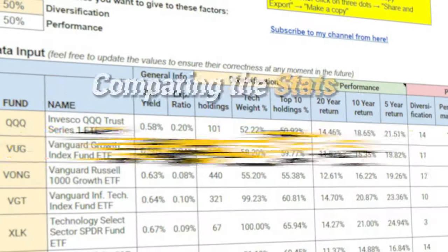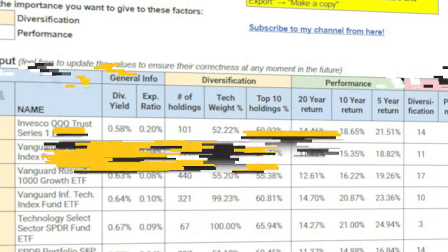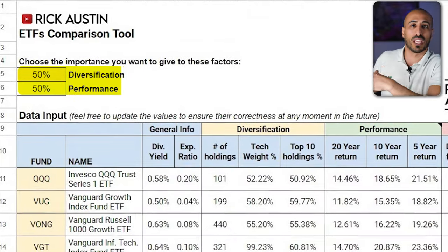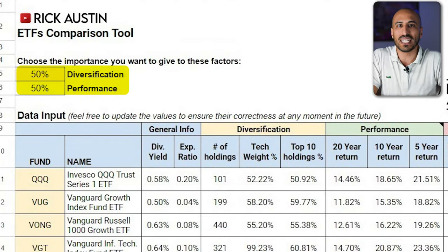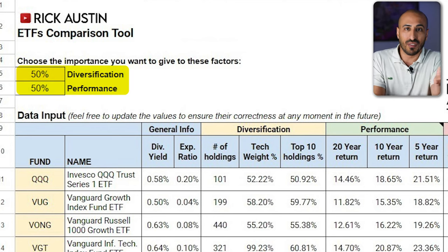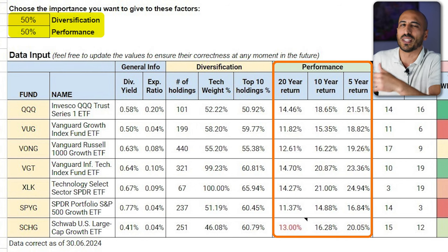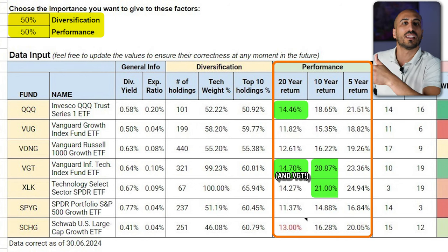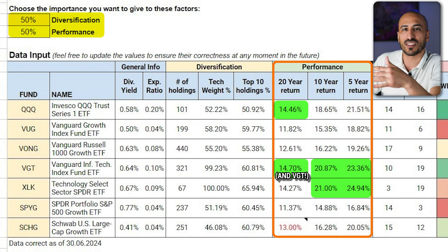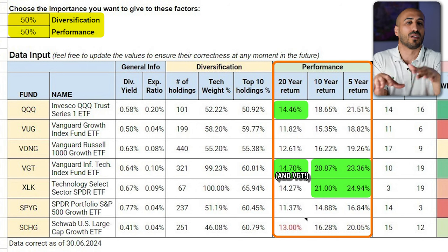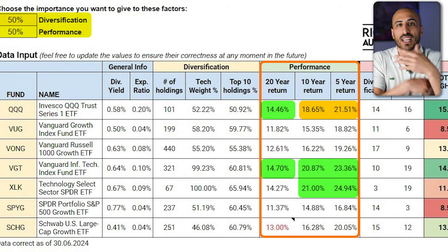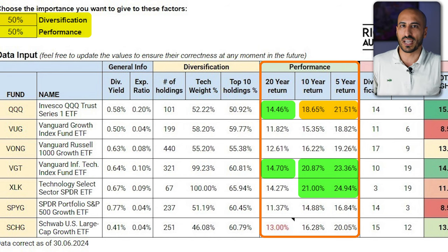Now that we have all the information, let's look at the comparison table. The diversification and performance weights are currently set at 50/50. Looking at 20-year returns, QQQ is the best of all. Moving to 10-year and 5-year returns, VGT and XLK start outperforming QQQ slightly because they are fully invested in information technology — the sector that overperformed all others in the last decade. Notably, QQQ, while more diversified, manages to achieve almost the same performance as pure information technology ETFs.